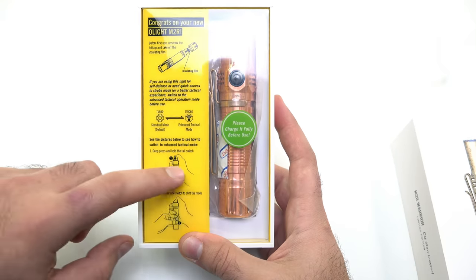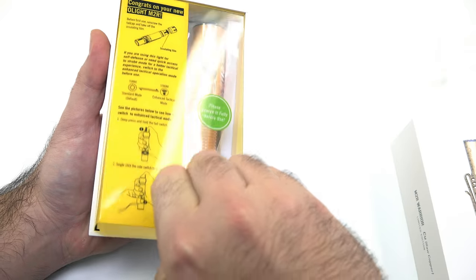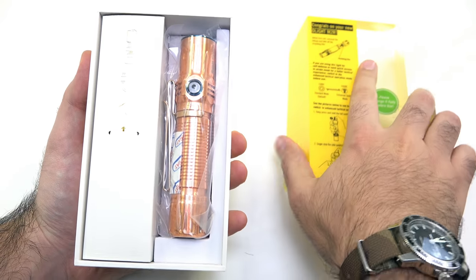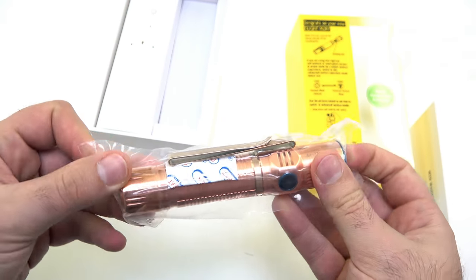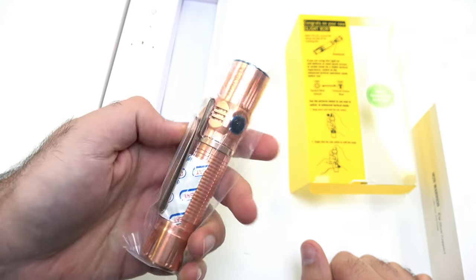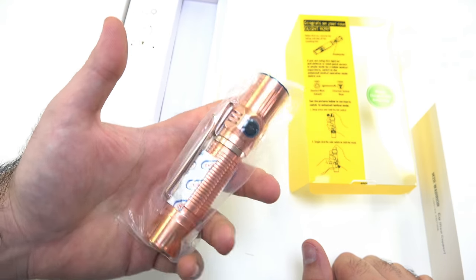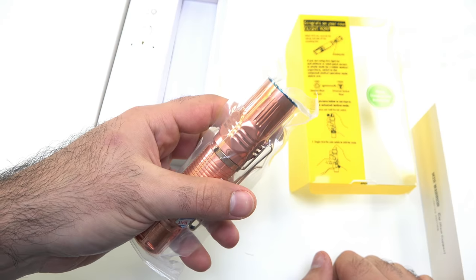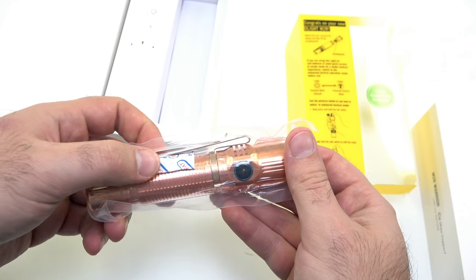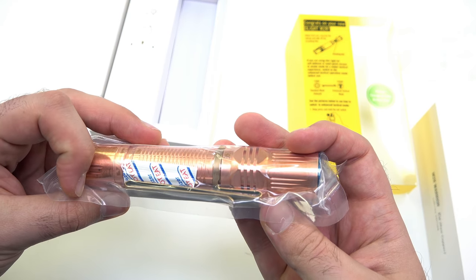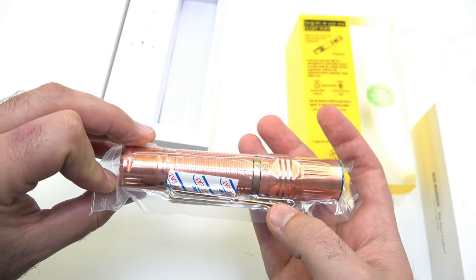Let's go ahead and open this up. Here's the light itself. Similar to the Eternal Edition of the S1R2 that we talked about with the raw copper, it does patina and will oxidize over time. We put it in this shrink wrap bag so it won't patina while it's on the way to you, and we also have this deoxidizer packet in here to help out with that.